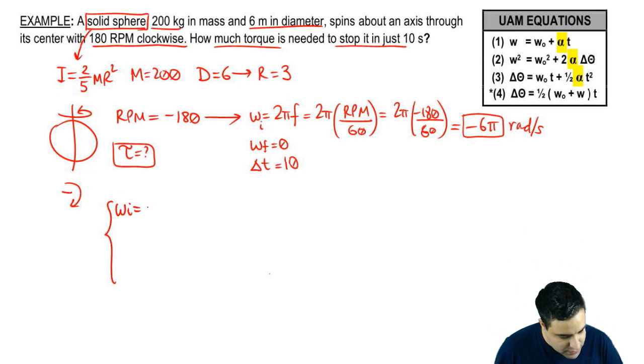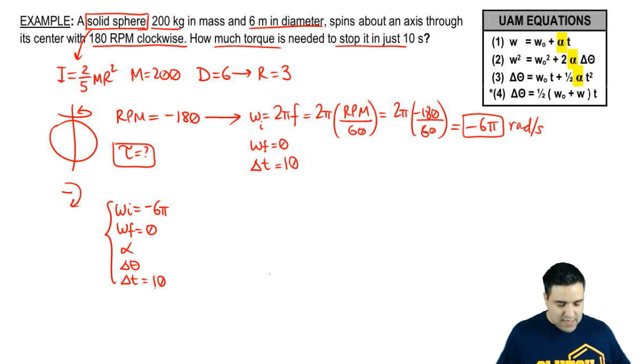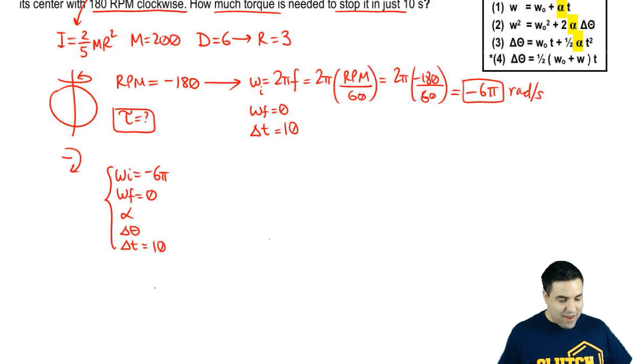Remember, the way I solve motion problems is by setting up the curly braces and putting all five motion variables there. Omega initial equals negative 6 pi. Omega final equals, we want it to be zero, alpha, delta theta, and delta t. Delta t is 10. And these two guys, we don't have them. And they're also not what we're looking for. But since I saw all these variables, I decided, let's start setting this up because I know this is coming.